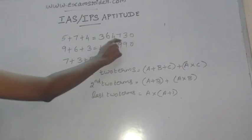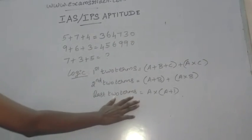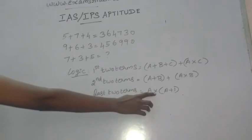And the second 2 terms is found using this formula: a plus b plus a into b. And the last 2 terms is found using a into a plus b.